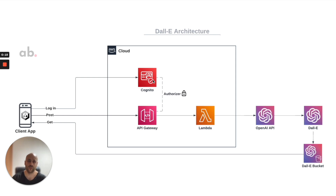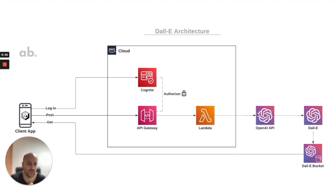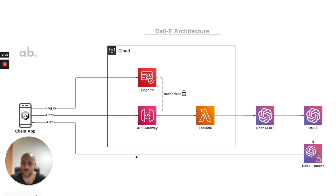The Unity client app logs into the system via Cognito, which is the authentication service of AWS. Once logged in, the application can post the prompt or message sent by the user to an endpoint created with API Gateway. API Gateway triggers a Lambda function, where we call the OpenAI API — not for ChatGPT this time, but for DALL-E. We call the image generation endpoint of the OpenAI API, an image is generated and stored in a bucket, and in the Lambda function we return the URL of that image.